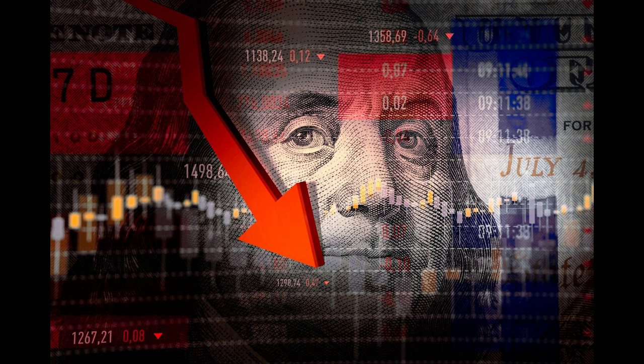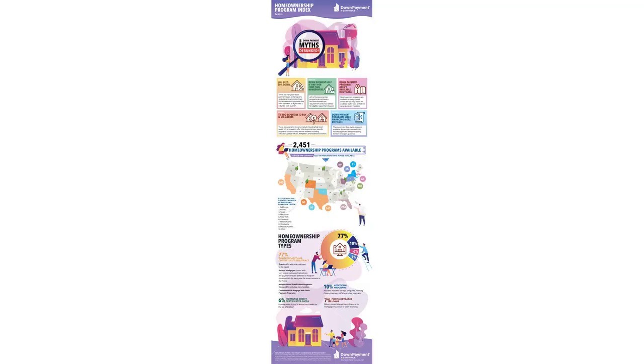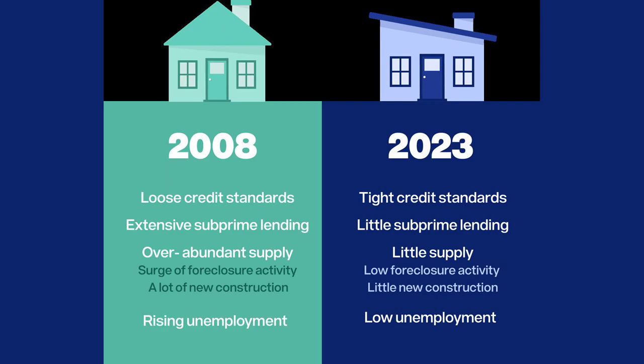Government Policies: Finally, government policies also played a role in the Great Recession. The U.S. government encouraged home ownership through policies such as the Community Reinvestment Act and the American Dream Down Payment Initiative. These policies led to an increase in subprime lending and the housing bubble.